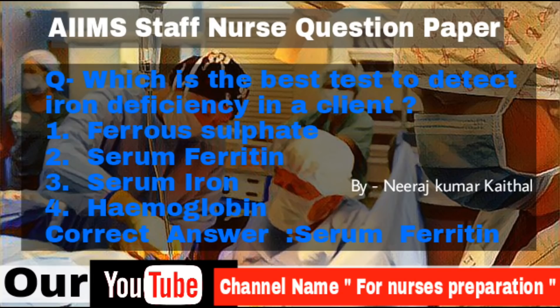Question: Which is the best test to detect iron deficiency in a client? Options: Ferrous sulphate, Serum ferritin, Serum iron, Hemoglobin. Answer is Serum ferritin. Please subscribe our channel for such important, educative, and interesting videos.